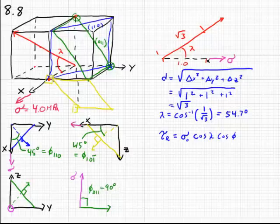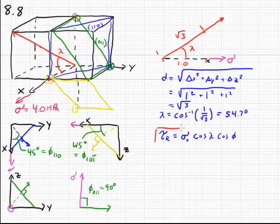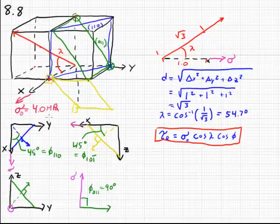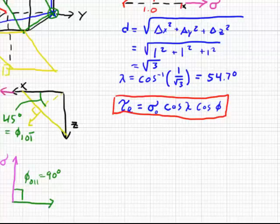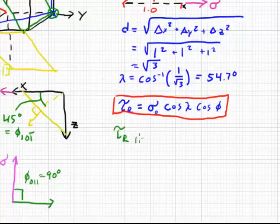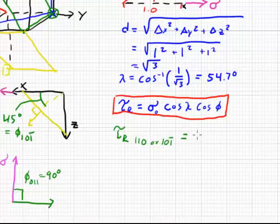We can now use our governing equation to plug our values in. Our nominal stress is 4.0 megapascals. Our angle lambda is 54.7 degrees, and our phi changes depending on which plane you're referring to. Phi is the same for the 1-1-0 and the 1-0-1-bar planes. So our resolved shear stress for 1-1-0 or 1-0-1-bar planes, when calculated out, 1.63 megapascals.